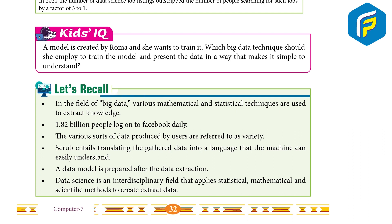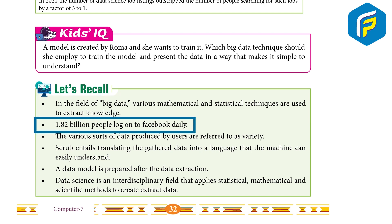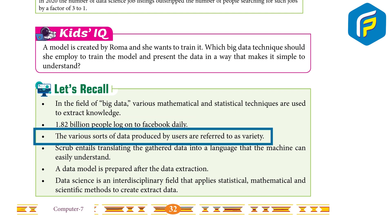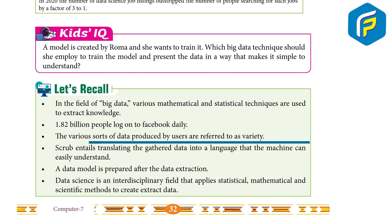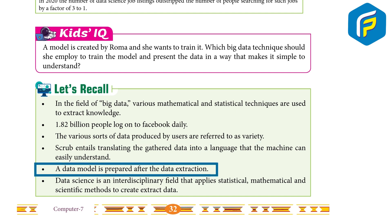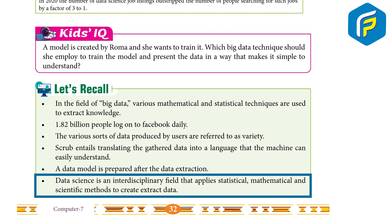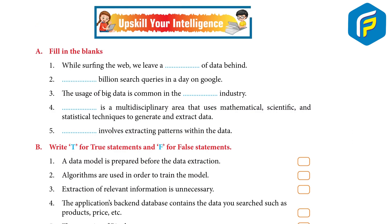Let's recall: in the field of big data, various mathematical and statistical techniques are used to extract knowledge. 1.82 billion people log on to Facebook daily. The various sorts of data produced by users are referred to as variety. Scrub entails translating the gathered data into a language that the machine can easily understand. A data model is prepared after data extraction. Data science is an interdisciplinary field that applies statistical, mathematical, and scientific methods to create and extract data.